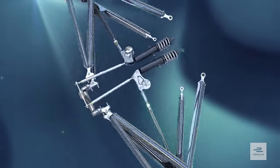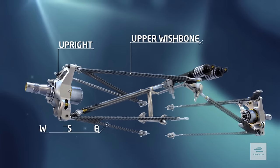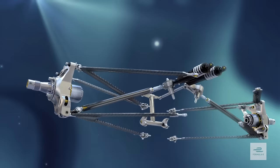Machined uprights house the rear axles and connect the upper and lower wishbones at the outboard end. Each side can move up and down completely independently of the other, transferring loads through the pushrods.